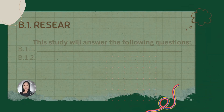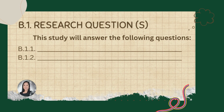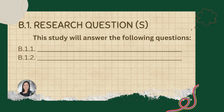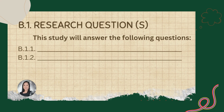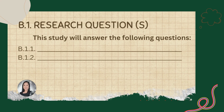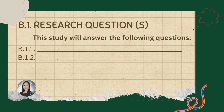Under Part B, we have the research question — or research questions if there are two or more. Take note, it is numbered as B.1. Then make an introductory statement like: 'This study will answer the following questions.' We use 'will answer' simply because you are still making the research plan. If there are two or more research questions, you may number them as B.1.1, B.1.2, etc.